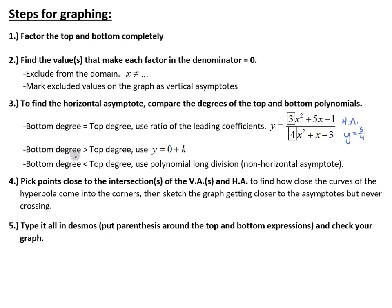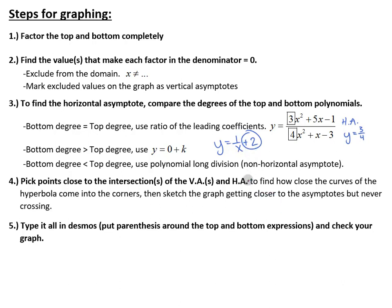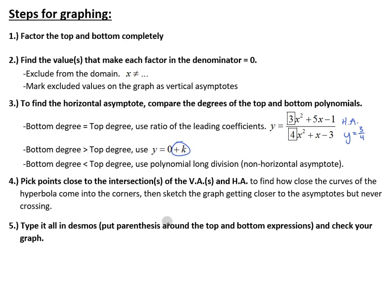If the bottom degree is bigger than the top, it defaults to y equals 0, like our parent function. However, sometimes they'll add a plus k after the polynomials. If they do that, the horizontal asymptote would start at 0 and then we'd add the k value — so for example, 0 plus 2 gives y equals 2. If there's a plus or minus after the fraction, we need to move the horizontal asymptote up or down by that value.